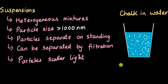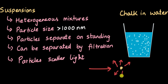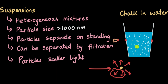Other properties of suspensions: particle size is greater than 1000 nanometers, particles separate on standing, and they can be separated by filtration. Finally, particles scatter light. Because the particle size is quite large, when light strikes a particle it scatters in all directions. So if you shine a laser through this mixture, you can see the path of the light inside it.